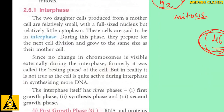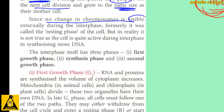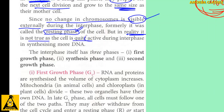During interphase, the two daughter cells produced from the mother cell are relatively small, with full-sized nuclei but relatively little cytoplasm. These cells are said to be in interphase. They prepare for the next cell division and grow to the same size as their mother cells. Since no visible change in chromosomes occurs externally, this phase is also called the resting phase, though in reality the cell is quite active.